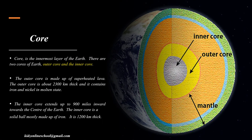The core is the innermost layer of the Earth. There are two cores of the Earth: the outer core and the inner core. The outer core is made up of superheated lava and is about 2,300 km thick, containing iron and nickel in molten state. The inner core extends up to 900 miles inward towards the center of the Earth. The inner core is a solid ball mostly made up of iron and is 1,200 km thick.